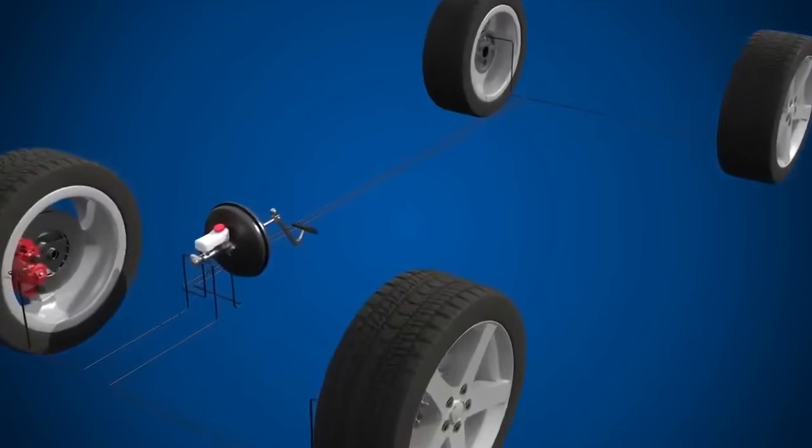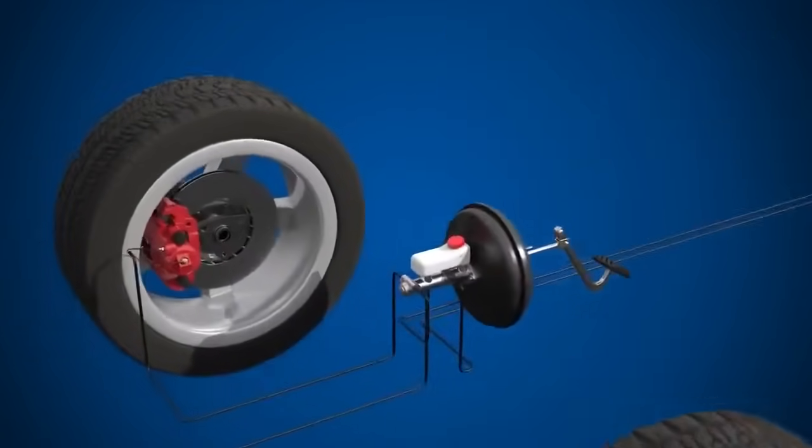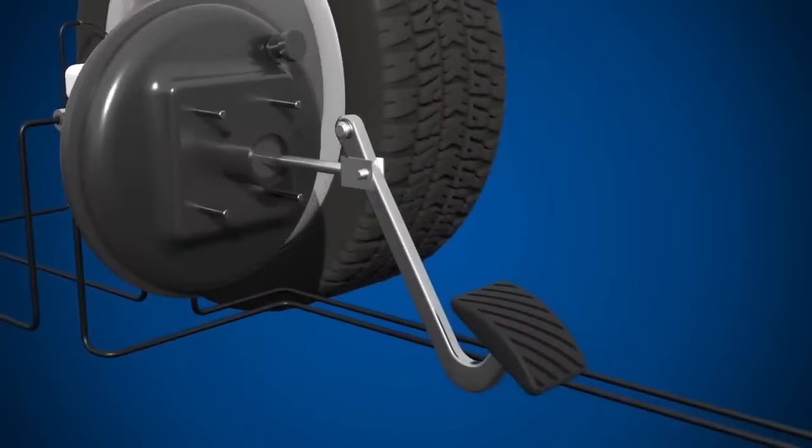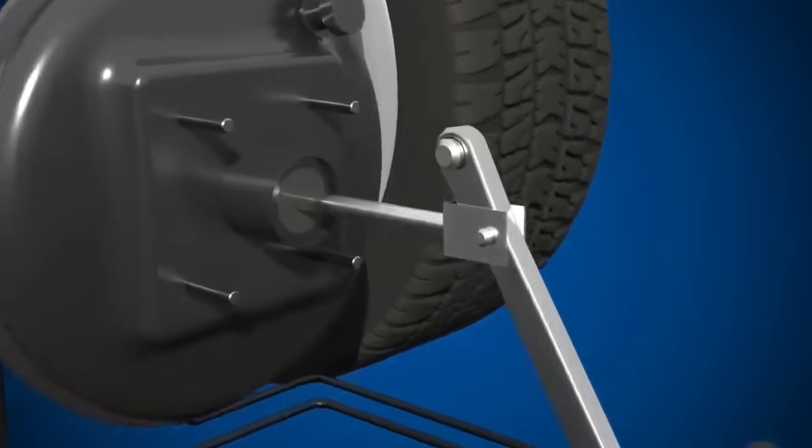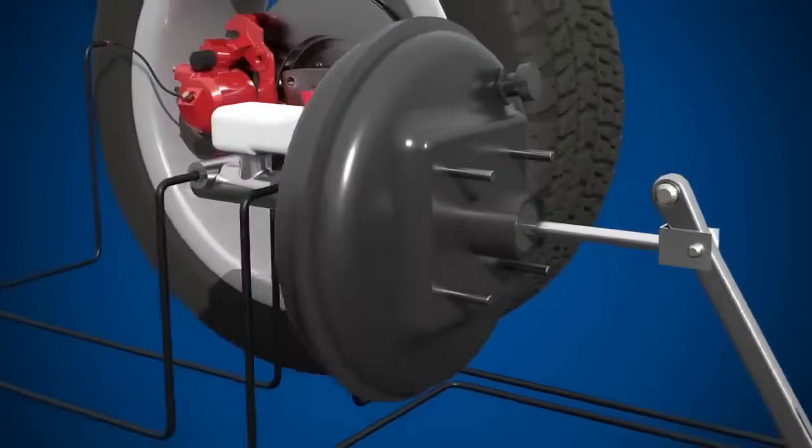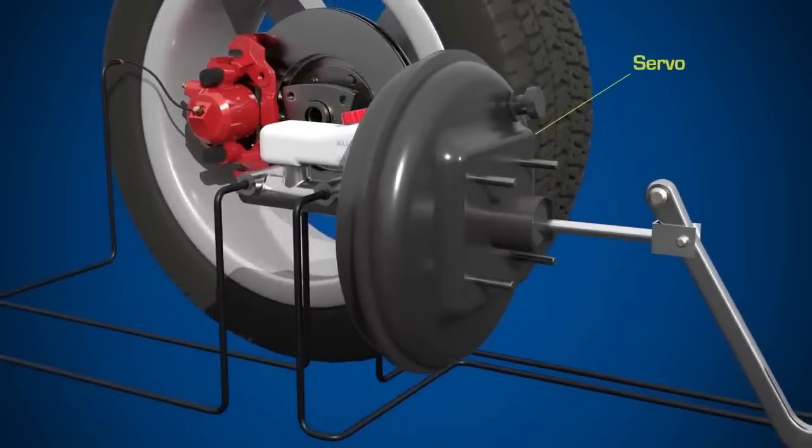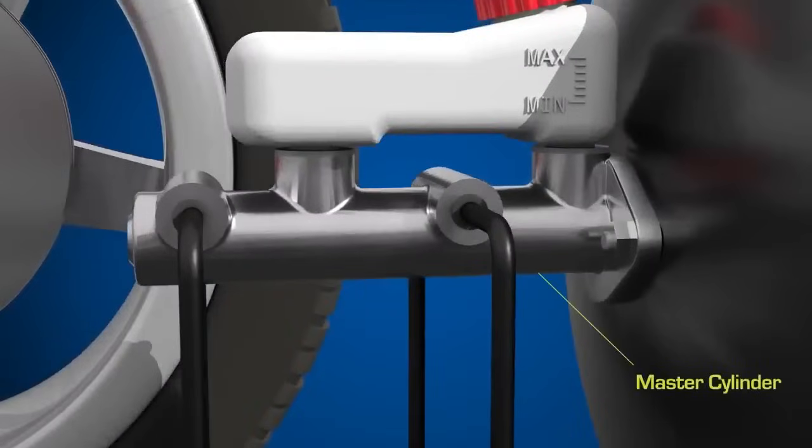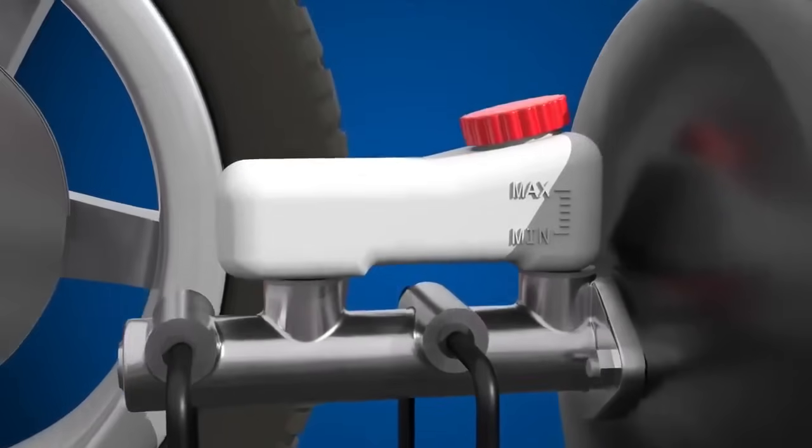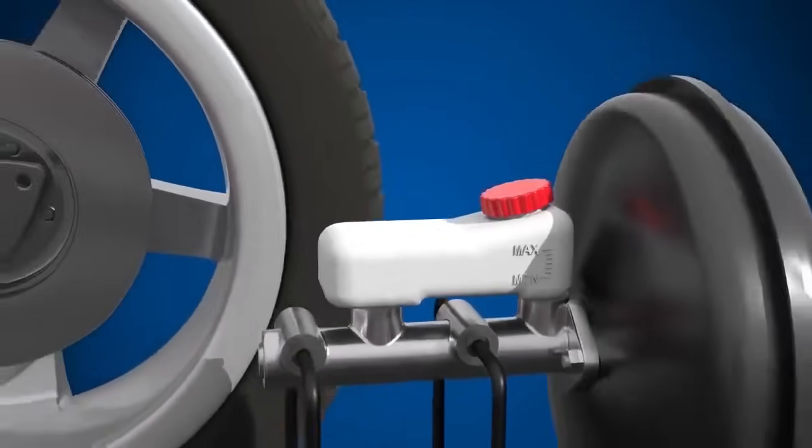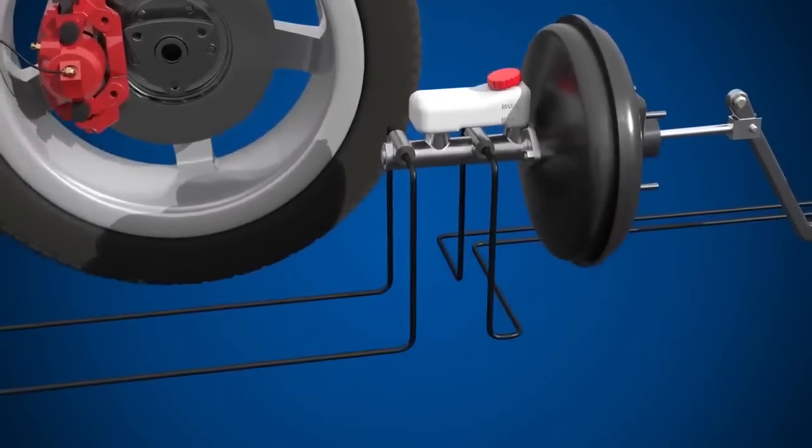Let's take a look at the components that make up a typical hydraulic braking system. We have the brake pedal, the pushrod, the servo, the master cylinder, the reservoir, and hydraulic lines.